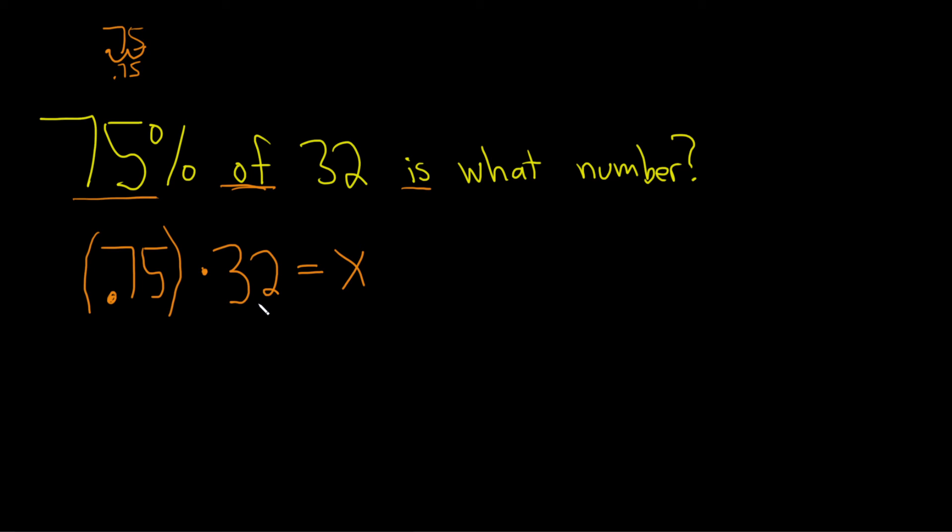Okay, so that's it. So now I'm going to go ahead and just put this in my calculator. So .75 times 32. So I got 24.